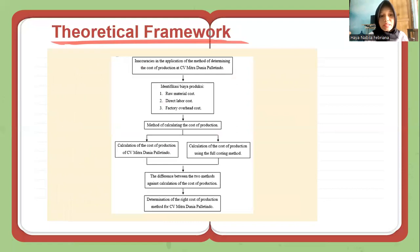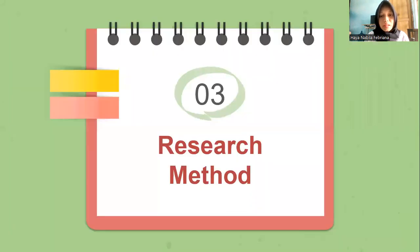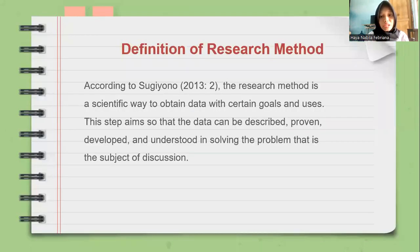This picture shows the theoretical framework of this research. Moving on to the research method section: according to Sugiyono, the research method is a scientific way to obtain data with certain goals and uses. This step aims so that the data can be described, proven, developed, and understood in solving the problem that is the subject of discussion.